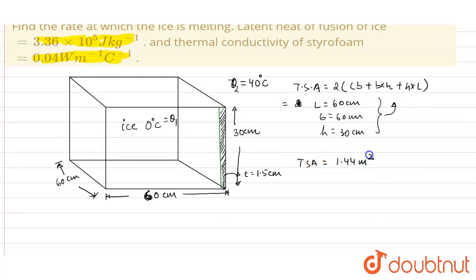This is the total surface area through which the heat conduction is taking place. Since the thickness of the wall is given as 1.5 centimeter, we can find the rate of the heat flow into the box by the Fourier's law of conduction. So the rate of heat flow into the box will be: